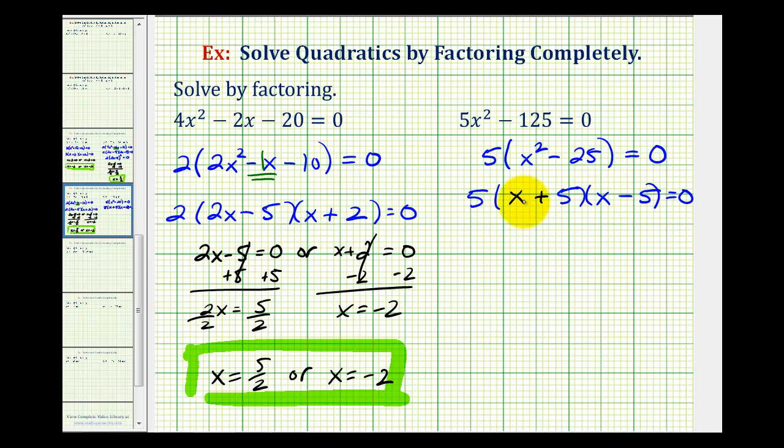Because this product is equal to 0, either the factor of x plus 5 must equal 0 or the factor of x minus 5 must equal 0. Subtracting 5 on both sides, we would have x equals negative 5. Here, we would add 5 to both sides, giving us a solution of x equals positive 5.